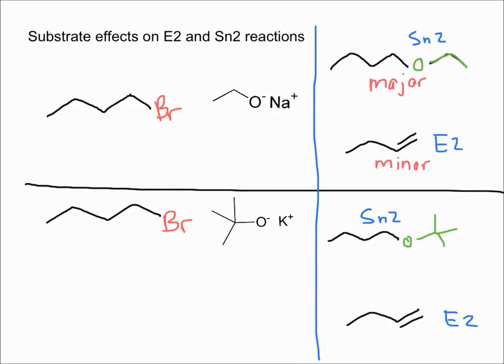With the sodium ethoxide as the nucleophile, your major product would be the molecule that underwent the SN2 reaction. This means that if you use sodium ethoxide as a base, you're going to get mostly SN2 reactions.